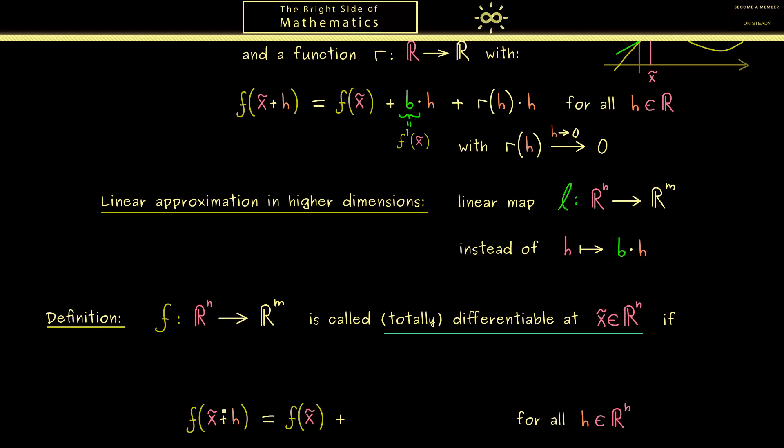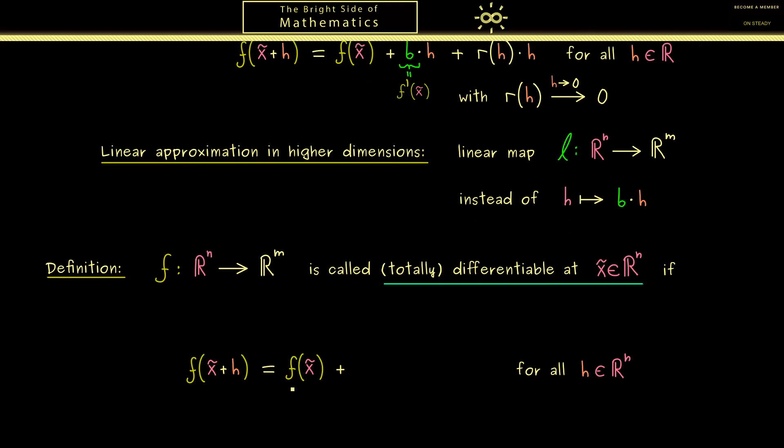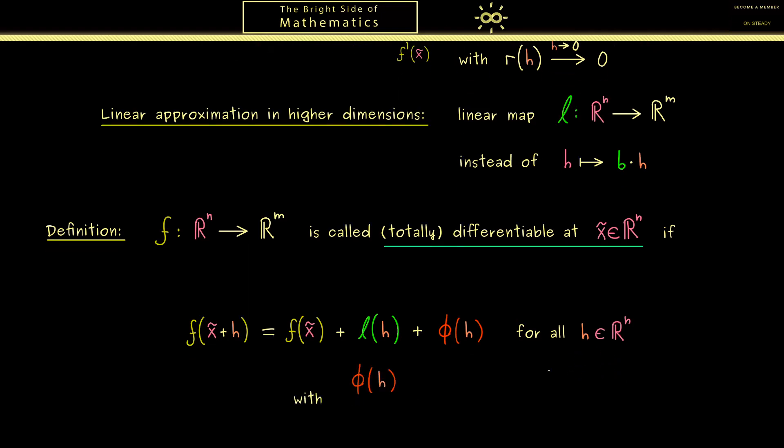And now we already know what we need for this definition, namely this equation here in the generalized form. So we write f of x tilde plus h is equal to f of x tilde plus a linear map l, l of h, plus a rest term which should be small for small h. And in order to keep it simple, let's put everything for the rest term into one function phi of h. Now in the one dimensional case, this means the function phi is so good that it goes to 0 even when we divide it by the number h. However, here we now can't divide by h because h is a vector now.